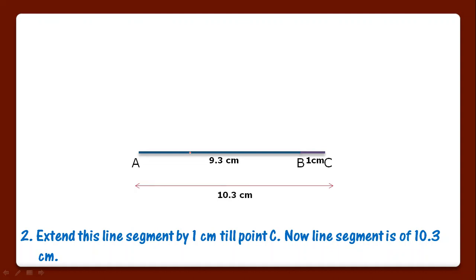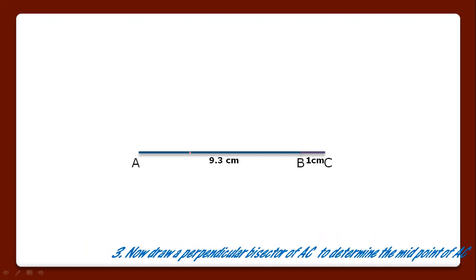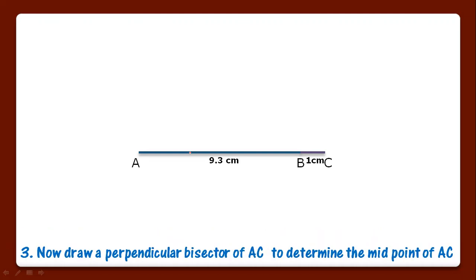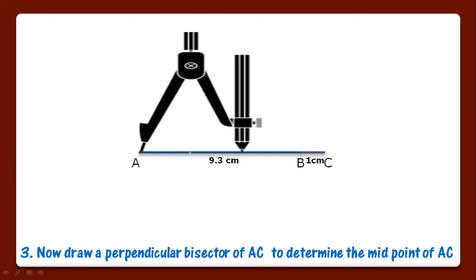AC is a line segment of length 10.3 cm. Now third step: you have to draw a perpendicular bisector of AC to determine the midpoint of AC. To make perpendicular bisector, we have to open our compass more than half of 10.3.